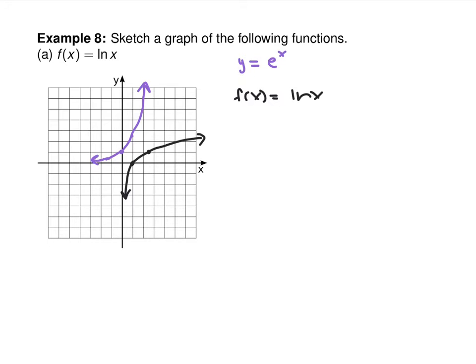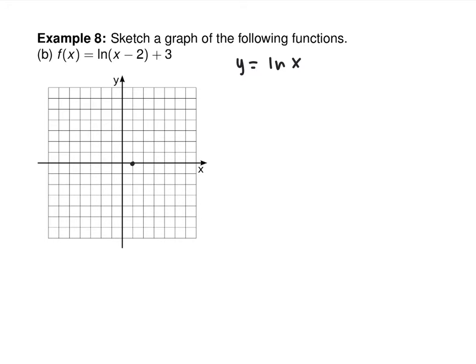You're then asked to do some shifts — like ln of x minus 2 plus 3. Take that ln of x picture and shift it right 2 and up 3. It now has a vertical asymptote at x equals 2 instead of x equals 0.